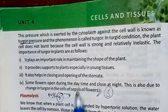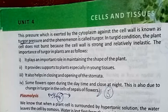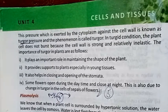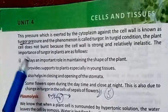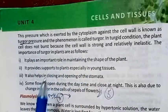This pressure is exerted by the cytoplasm against the cell wall. The pressure exerted by cell contents on the cell wall is called turgor pressure, and we call this phenomenon turgor.